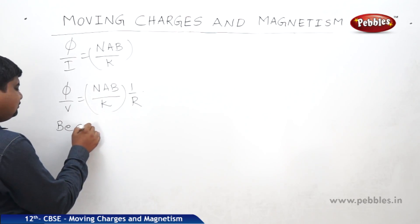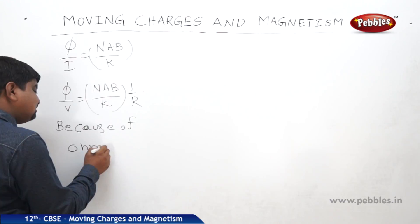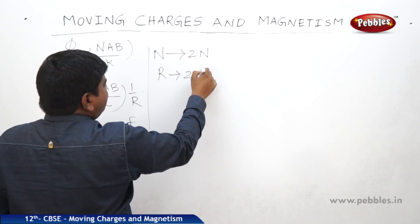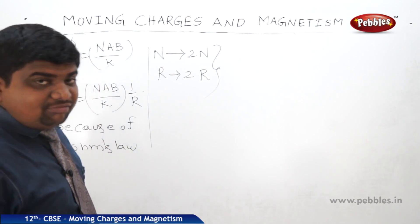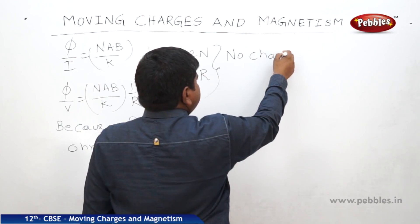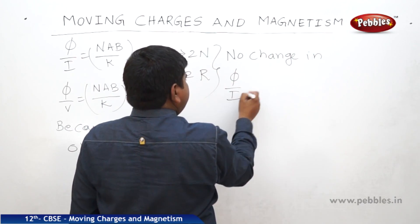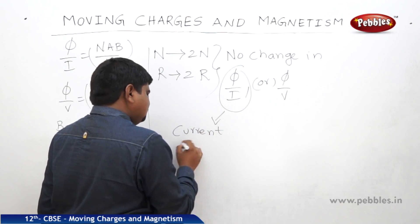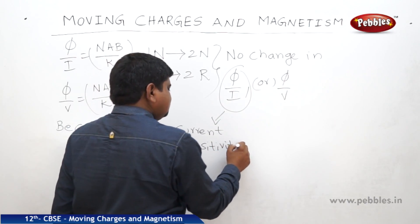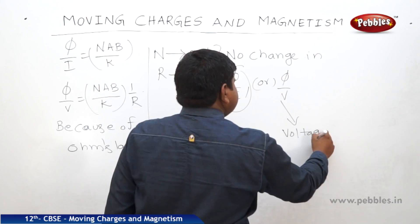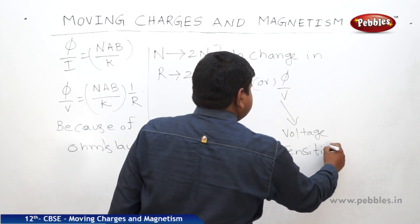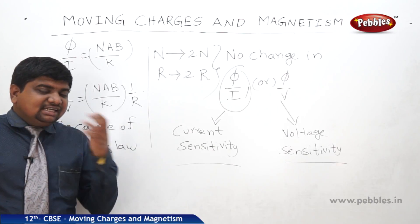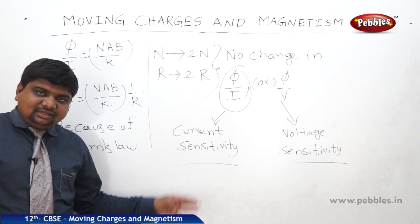This follows from the implication of Ohm's law: if N becomes 2N, R also becomes 2R, so there is no change in φ/I or φ/V. No change in current sensitivity φ/I or voltage sensitivity φ/V. We can convert a moving coil galvanometer into a voltmeter by connecting a resistance in series, or into an ammeter by connecting a resistance in parallel.